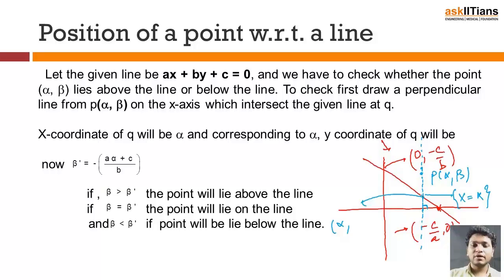And if the x coordinate is alpha, we can find out the y coordinate by putting x equal to alpha in this equation. After we put the value as alpha for x in this, the value of y will be nothing but minus a alpha plus c upon b.